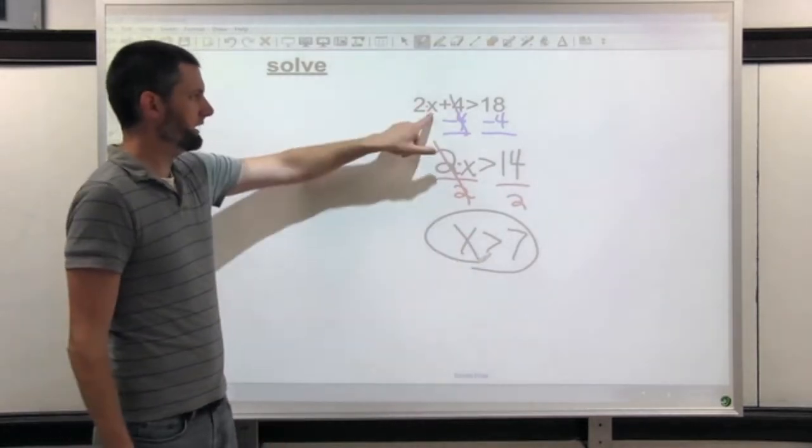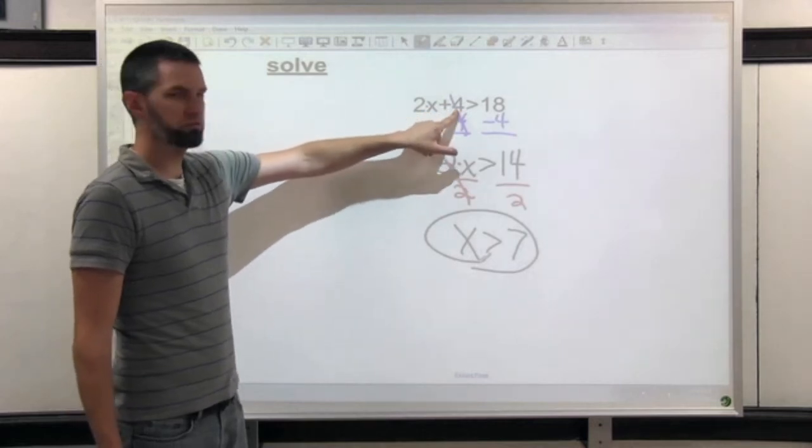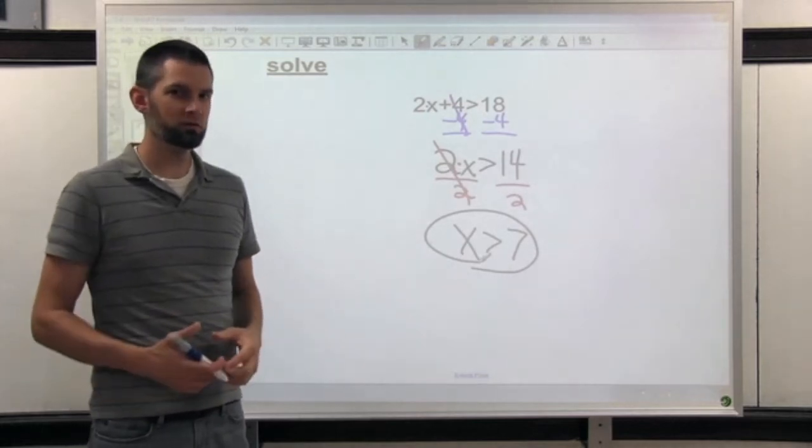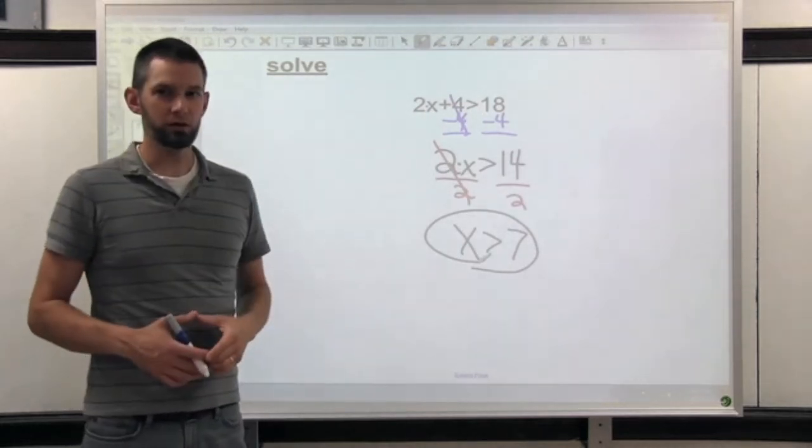Try it. Put 8 in here. 2 times 8 is 16, plus 4 is 20. 20 is greater than 18. There's an infinite amount of answers that make that inequality true.